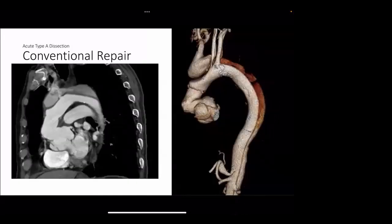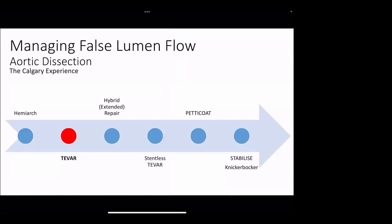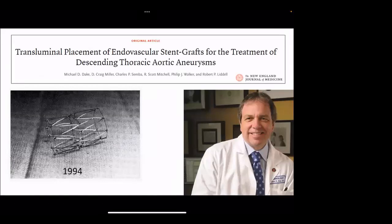As a result, patients are left with antegrade flow into the false lumen. Because they also typically have fenestrations or communications in the visceral segment, they have a flow circuit and you get this partially thrombosed false lumen prone to aneurysmal dilatation. Another weakness of simple hemiarch repair is its inability to address primary intimal tears located beyond the ascending aorta. One picture demonstrates a case where intimal tears are in the mid arch, and this patient developed aneurysmal enlargement in the arch.